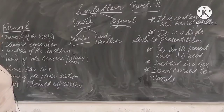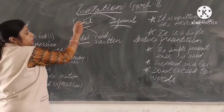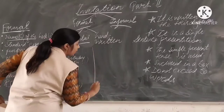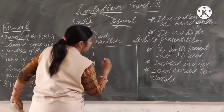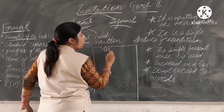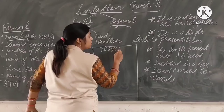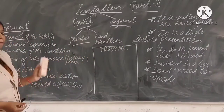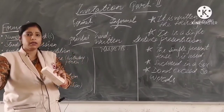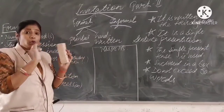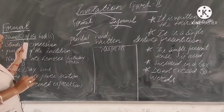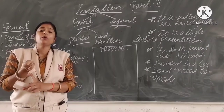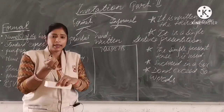The format of a formal invitation is as follows. First, name of the host — for example, Mr. and Mrs. XYZ or Mrs. PQR. Then the standard expression: 'Request the pleasure of your company,' or 'solicit your benign presence,' or 'cordially invites you.' We can use whichever we like.